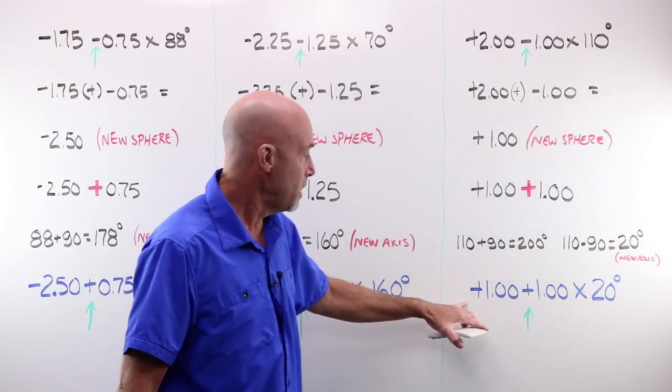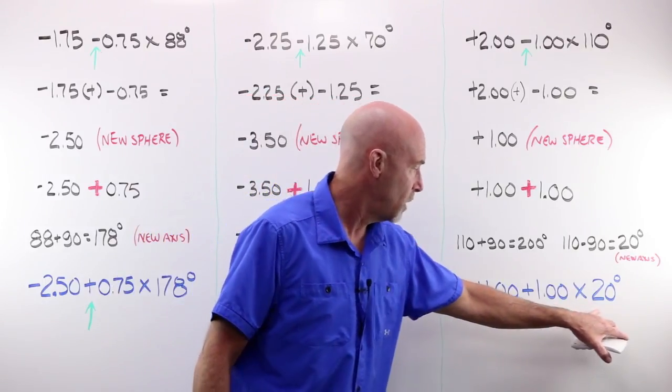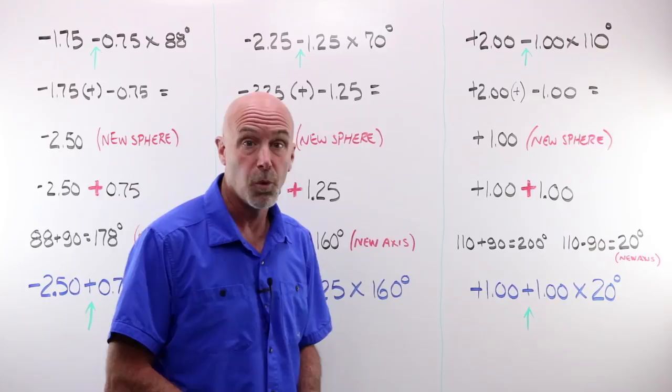This, rewritten in plus cylinder form, becomes a plus 1.00, plus 1.00, at axis 20.